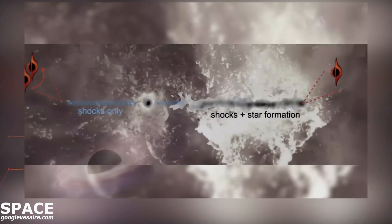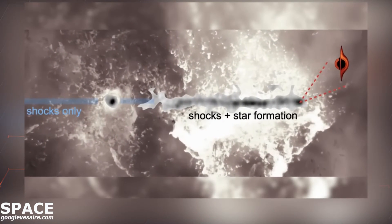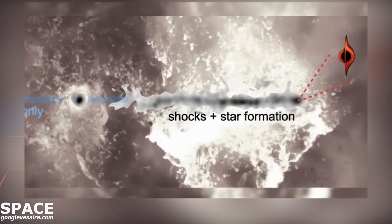Rather than gobbling up stars ahead of it, this speedy black hole is plowing into gas in front of it to trigger new star formation along a narrow corridor.